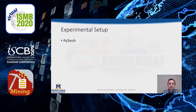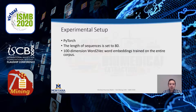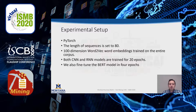For our experimental setup, we use PyTorch and set the sequence length to 80. We train 100-dimensional Word2Vec embeddings and train both CNN and RNN models for 20 epochs. We fine-tune BERT for 40 epochs, using binary cross-entropy loss and the ADAM optimizer.